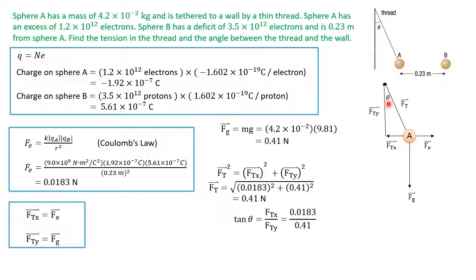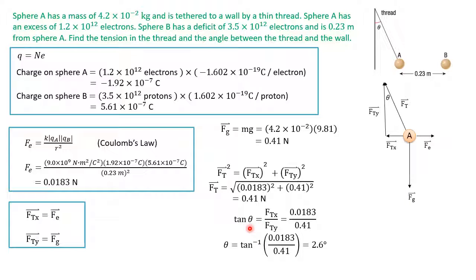The last thing to find is the angle the thread makes with the wall. We use a tangent ratio: tangent of theta equals the opposite side FTX divided by the adjacent side FTY. Since we have both values, we divide them and take the inverse tangent. Inverse tan of 0.0183 divided by 0.41 gives us an angle of 2.6 degrees.